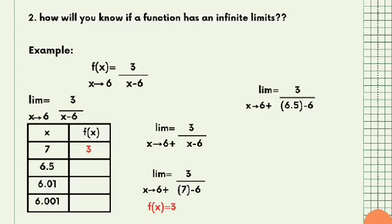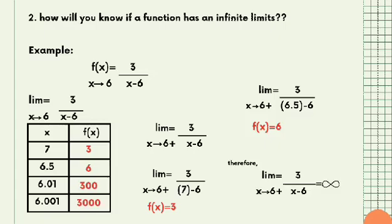Substituting x = 6.5: 3/(6.5 − 6) = 6. Substituting x = 6.01 gives 300. Since the values are increasing without bound, the limit of 3/(x − 6) as X approaches 6 from the right is equal to positive infinity.